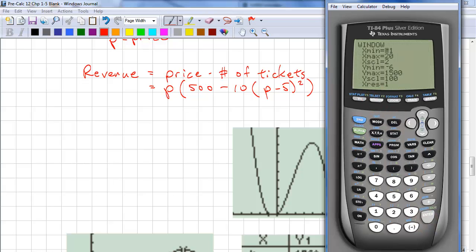Our window. Remember, x is our price. It's unlikely that we're going to increase our price much past $10. So we'll use that as a starting point.